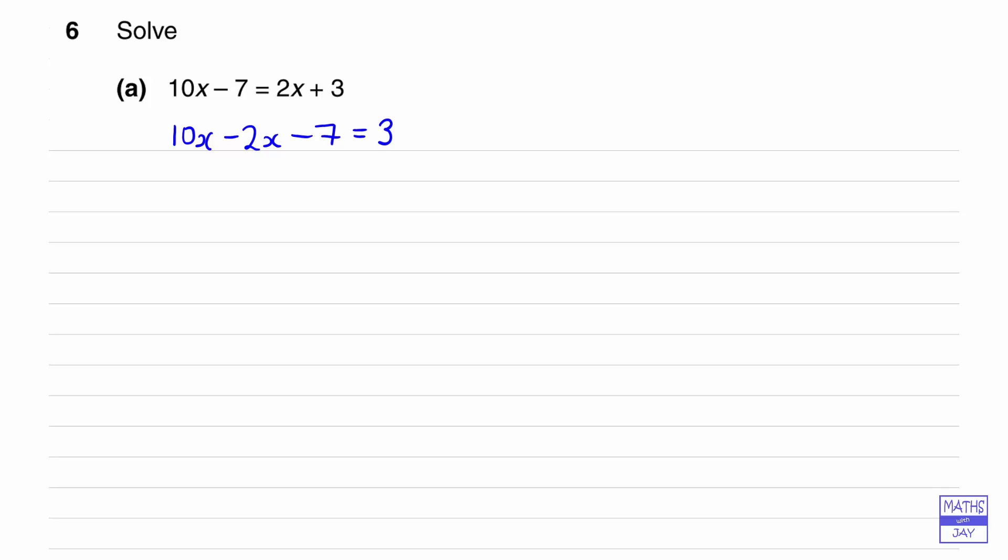So then we can rewrite the left-hand side as 8x minus 7 equals 3. So that's now a really simple equation.